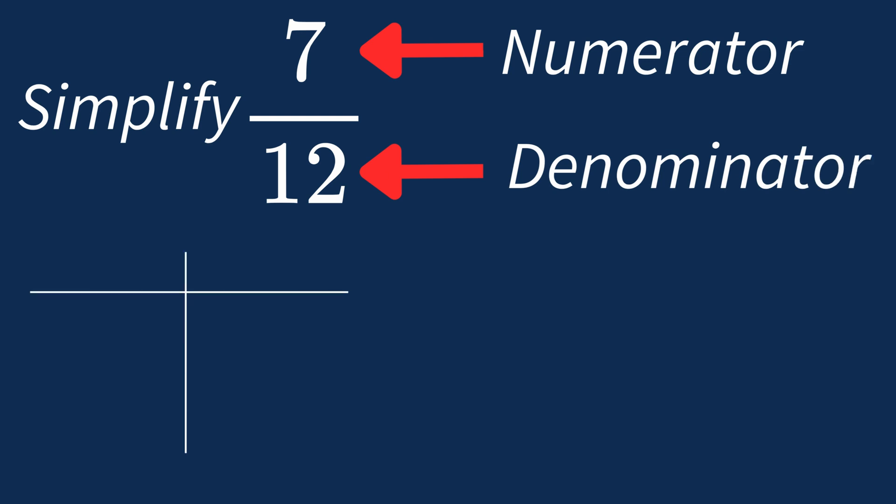First, let's list out the factors for each. For 7, the factors are 1 and 7. For 12, the factors are 1, 2, 3, 4, 6, and 12.